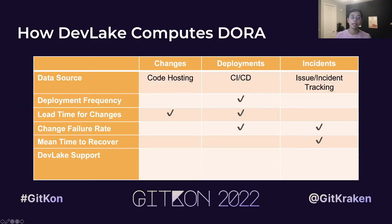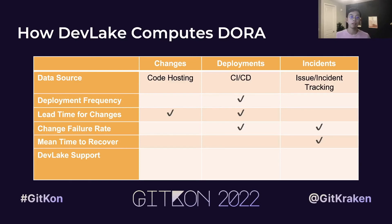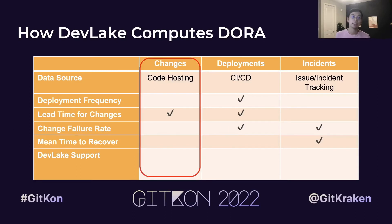So now you have a good understanding of what exactly DORA metrics are and how DevLake works. Let's talk about how DevLake computes DORA metrics and what configurations are required from the users. There are three key underlying entities for computing DORA metrics: changes, deployments, and incidents. The changes entity represents pull requests for most teams and usually does not require any additional configuration — it's needed for calculating the lead time for changes metric.